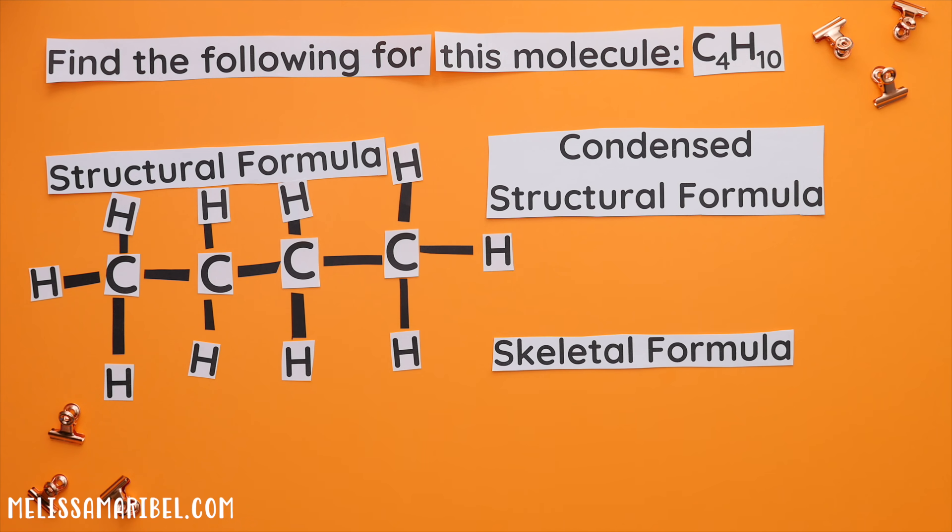Using this structural formula, we'll write the condensed structural formula. Where this first carbon has three hydrogens, so CH3. The next carbon has two hydrogens, so CH2.